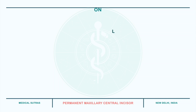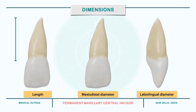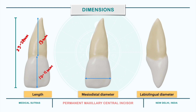Next we will look into the dimensions of the tooth. The overall length of the permanent maxillary central incisor is 23 to 24 mm, of which the crown length is 10 to 11 mm and the root measures about 13 mm. The mesiodistal diameter of the crown is 8 to 9 mm at the maximum or crest of curvature, and 7 mm at the cervix. The labiolingual diameter is 7 mm at the crest of curvature and around 6 mm at the cervix.